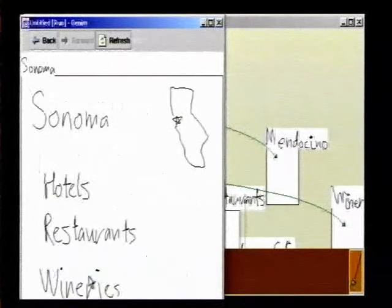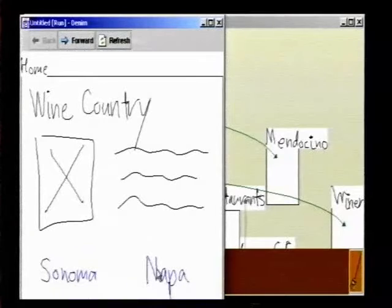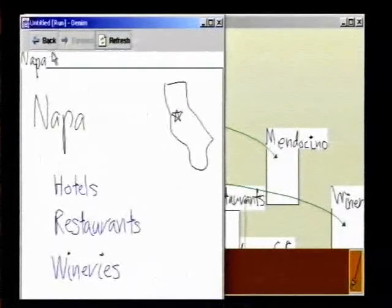Bob clicks on a hyperlink, and the browser shows the appropriate page. He can use the back and forward buttons just like in a real web browser.